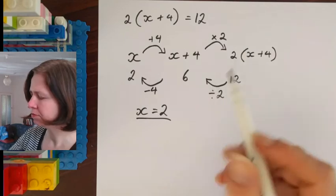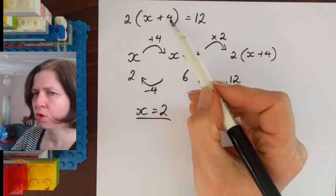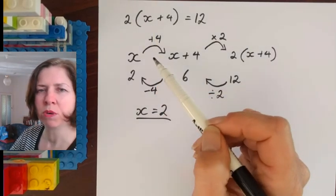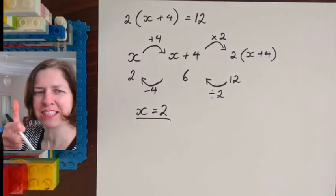I'm going to check my answer. 2 plus 4 gives me 6. Multiplied by 2 gives me 12. I found the right answer. That's awesome.